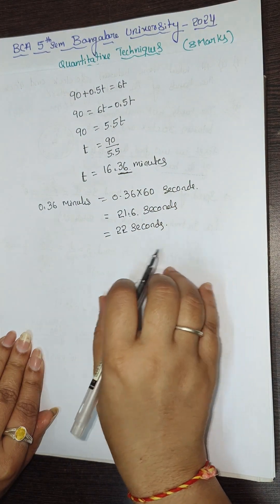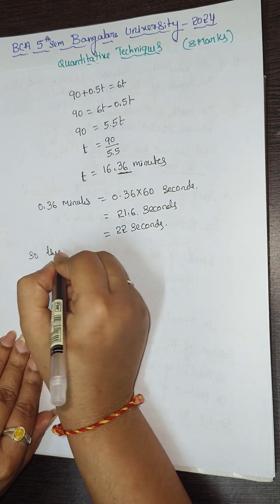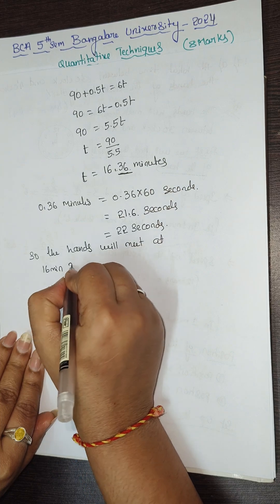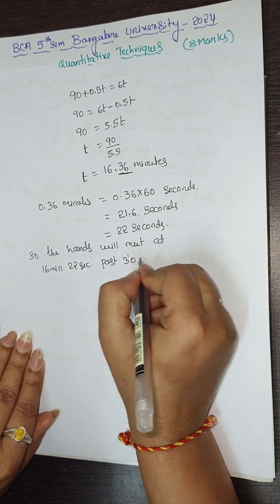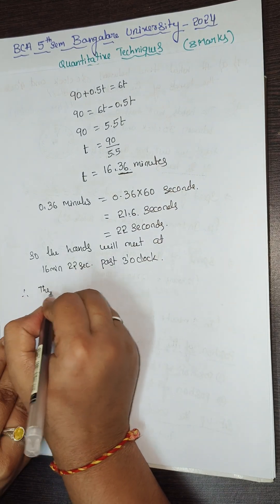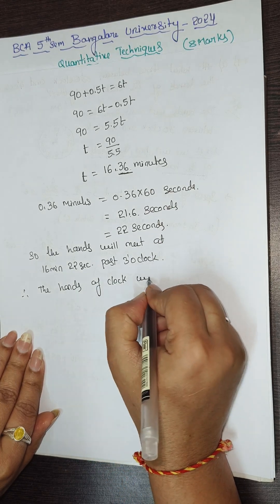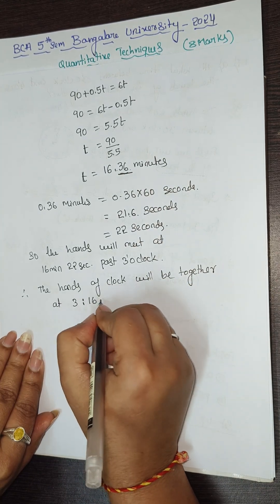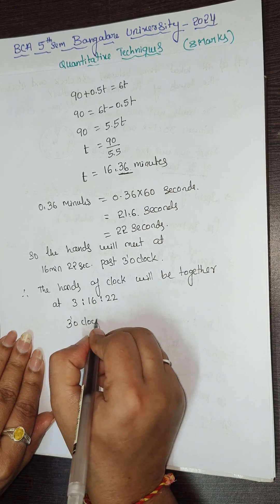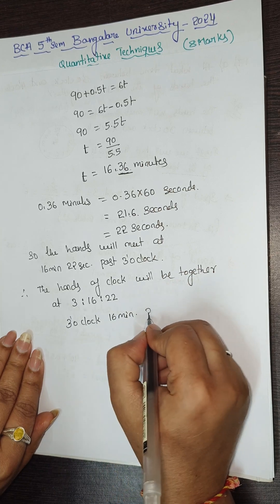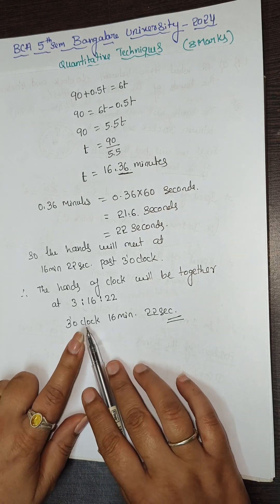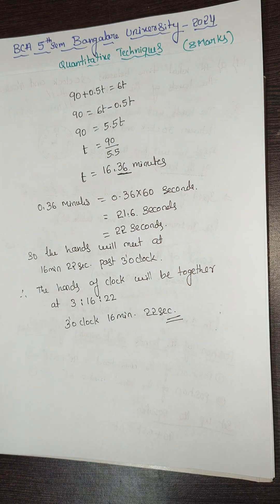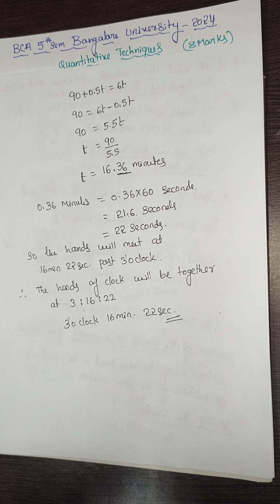Therefore the hands of the clock will be together at 16 minutes 22 seconds past 3 o'clock, that is at 3:16:22. Hope all of you understood this. We will continue the next questions in the next video. Please subscribe the channel and share the videos with your friends. Thank you.